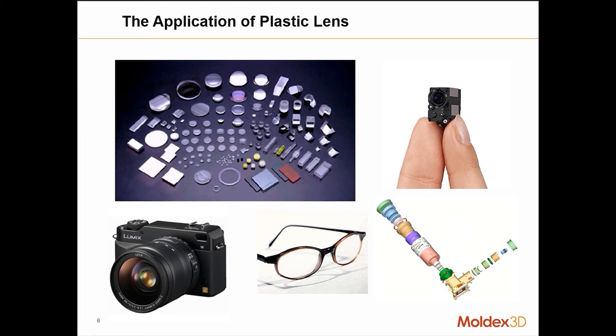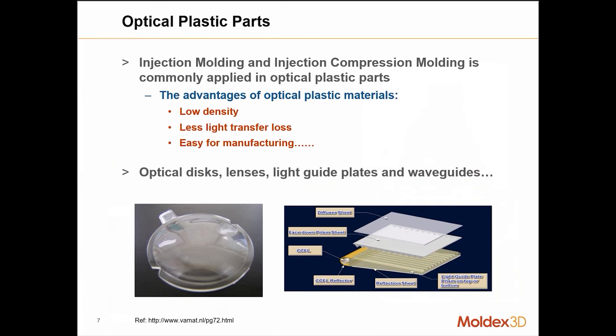We commonly see these in cameras, glasses, telescopes, binoculars, and such. Optical parts are manufactured using either glass or plastic. Glass has better properties to withstand environmental changes compared to plastics, but glass weighs more and the manufacturing process is more complex.